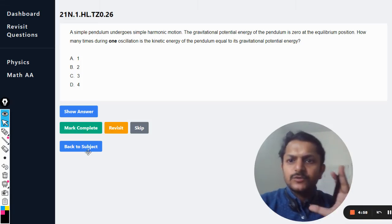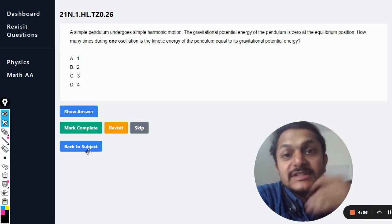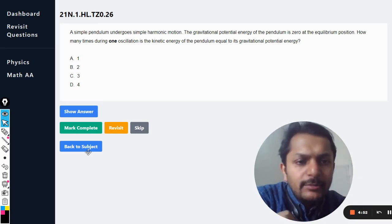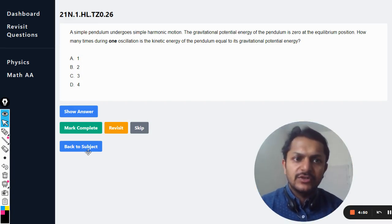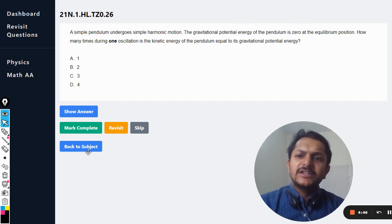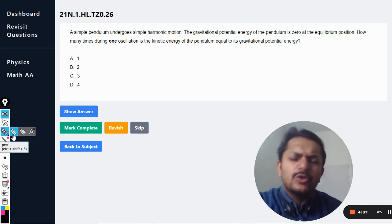Okay dear students, let's see what is in this question. A simple pendulum undergoes simple harmonic motion. The gravitational potential energy of the pendulum is zero at the equilibrium position because it is at the lowest point, and the lowest point is taken as the datum. How many times during one oscillation is the kinetic energy of the pendulum equal to the gravitational potential energy?